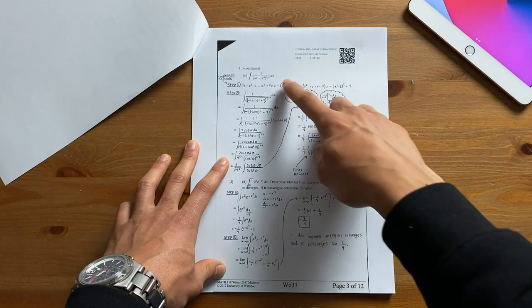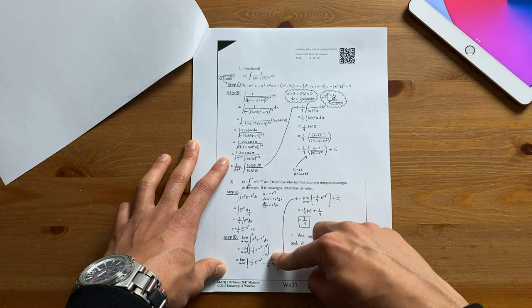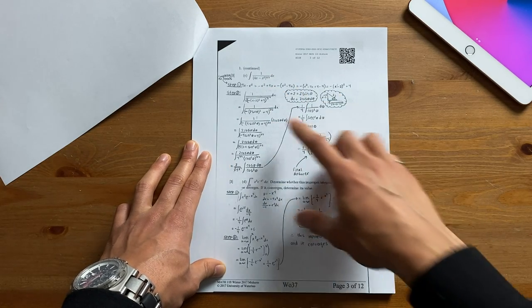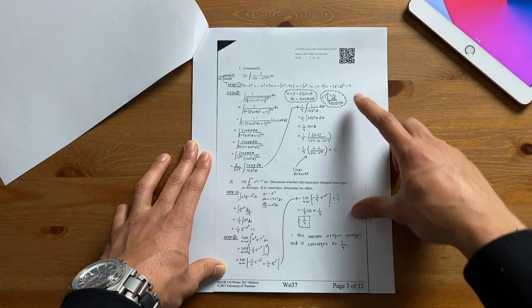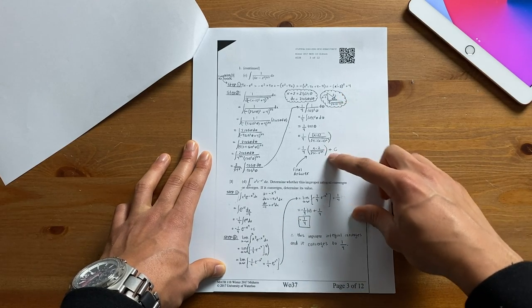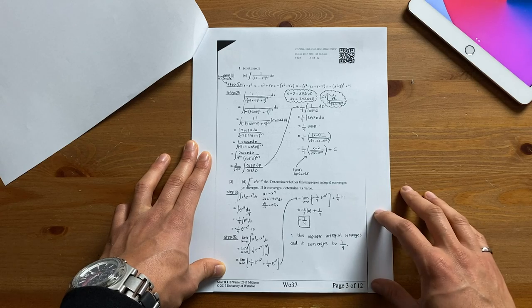Looking at my solution for question 1C and 1D you'll notice I labeled step 1 and step 2 as well as my final answer. The reason I did this is because the solution to this question is a little long and when I'm organized with my work I'm less prone to making silly mistakes. It also makes the grader more likely to give me part marks if my final answer isn't entirely correct.